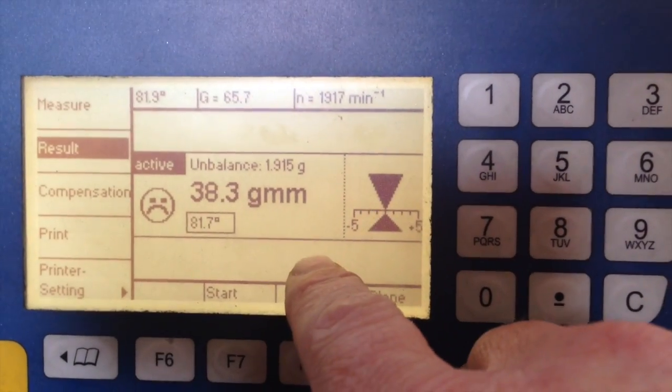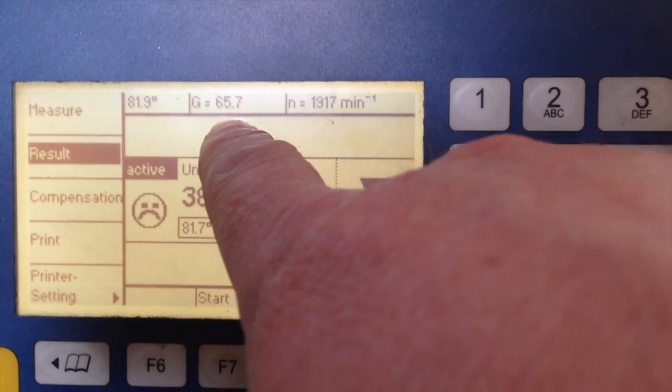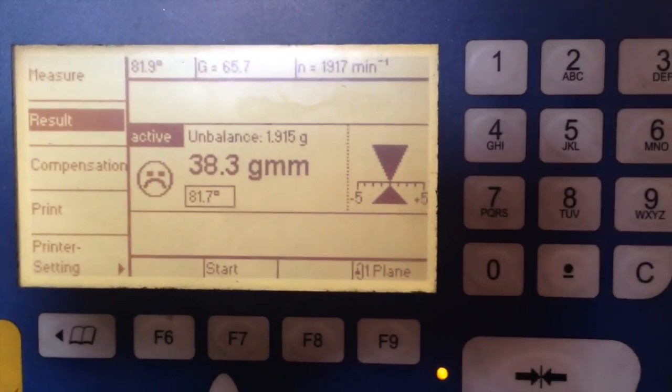This holder checked with 38.3 grams of imbalance, G 65.7 at 1,917 RPM.